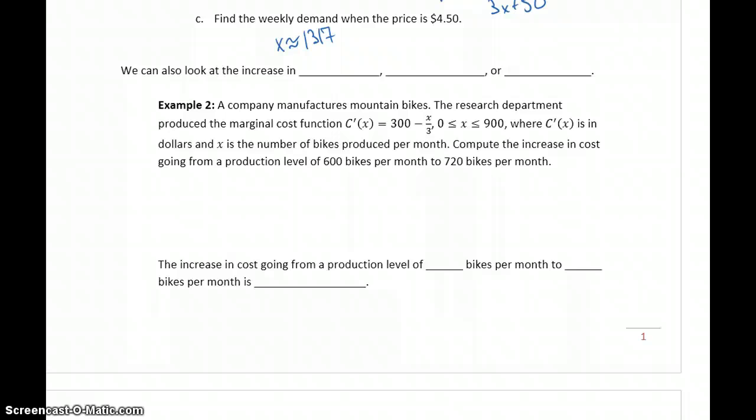We can also use indefinite integrals to look at the increase in either cost, revenue, or profit, or just the change in those values, as production increases from one set amount to another. So in this case, we have a company that manufactures mountain bikes. We have a marginal cost function where x is the number of bikes produced per month. We want to compute the increase in cost going from a production level of 600 bikes per month to 720.